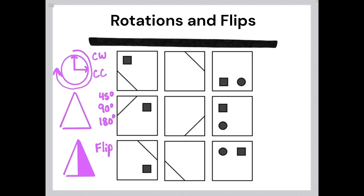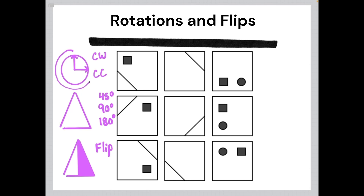So if you were to rotate something toward the right side, that would be clockwise. Counterclockwise would be the opposite — if the hands of the clock moved starting from the top, going to the left, down, and around.